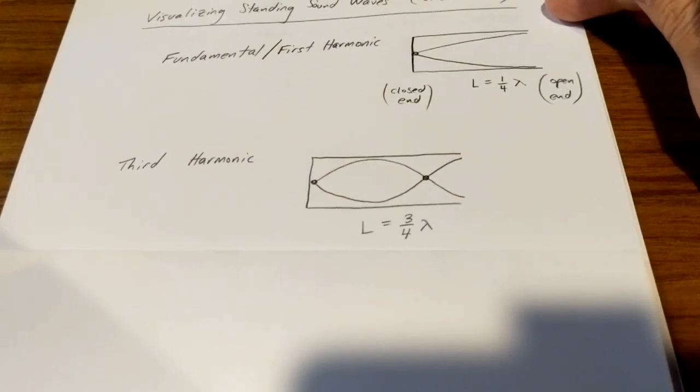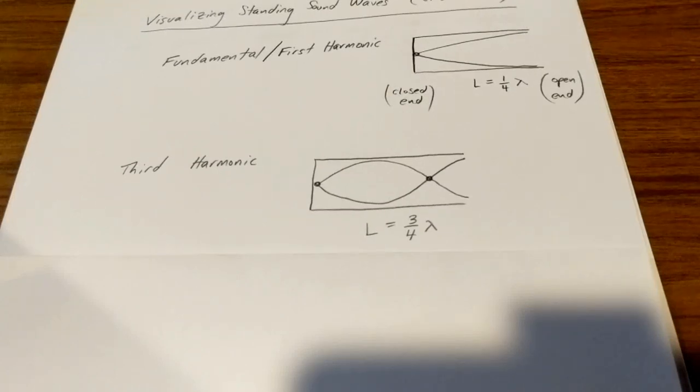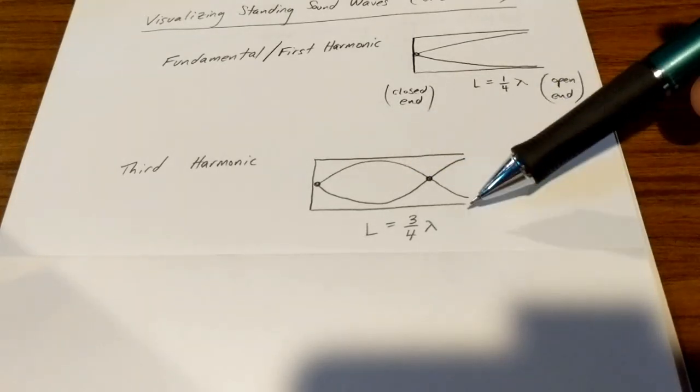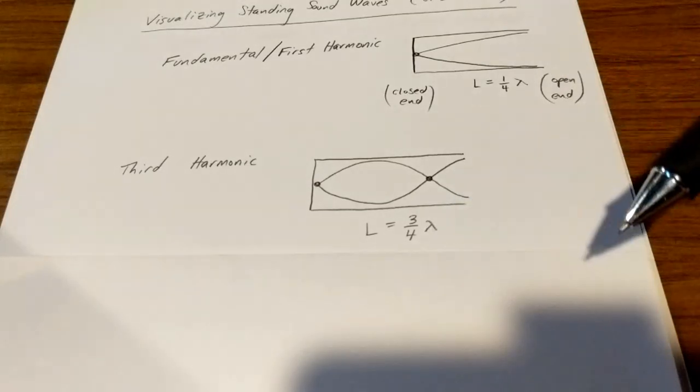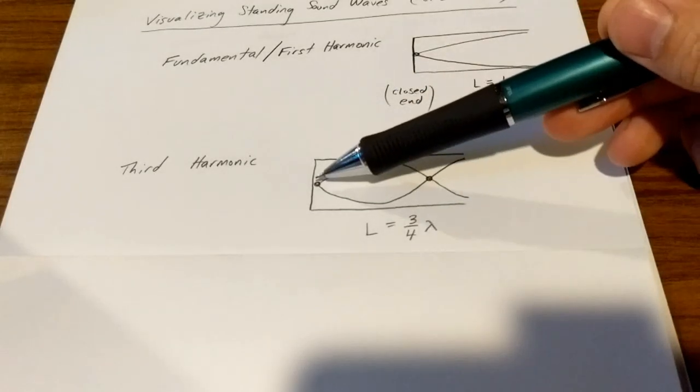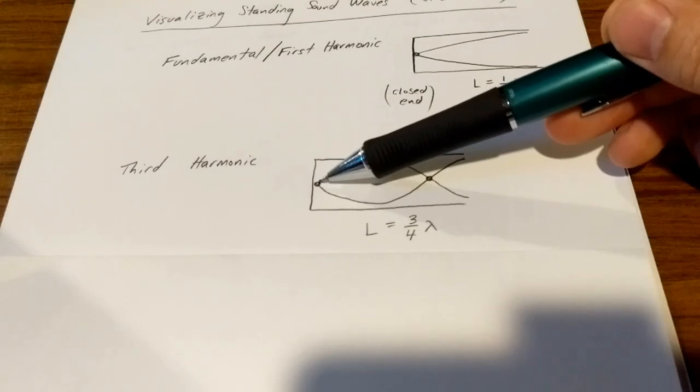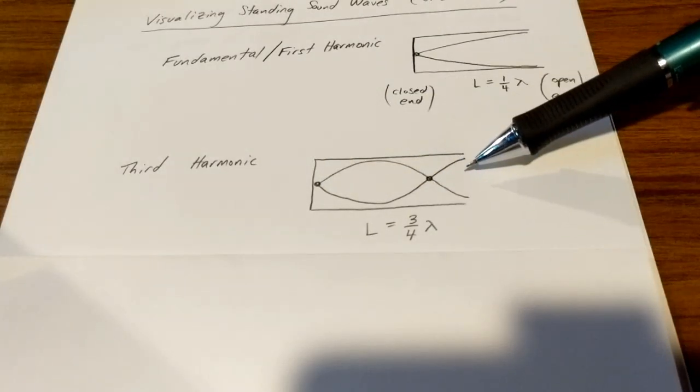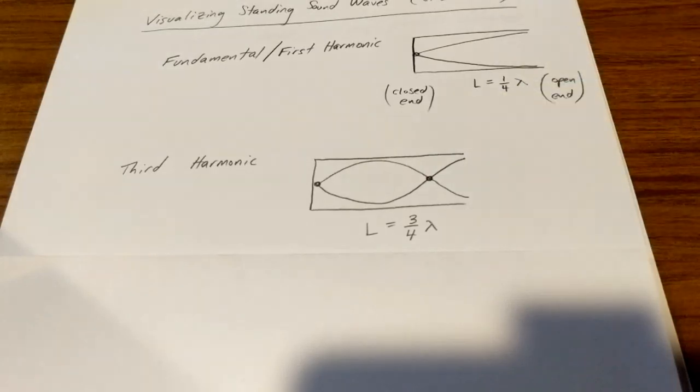There is no even, or there are no even harmonics for closed-tube standing sound waves or closed-tube resonance. So the next harmonic is called the third, and the third harmonic occurs when there are here two nodes, and the length of the tube is three-quarters of the wavelength. And again we note that at the closed-end, the air molecules do not move, and at the open-end, they move as far as possible from equilibrium.